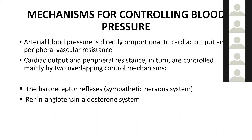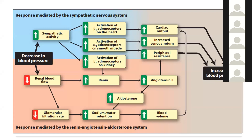The body controls blood pressure through two mechanisms. Arterial blood pressure is directly proportional to cardiac output and peripheral vascular resistance. These are controlled by two overlapping mechanisms: the baroreceptor reflex via the sympathetic nervous system, and the renin-angiotensin-aldosterone system.